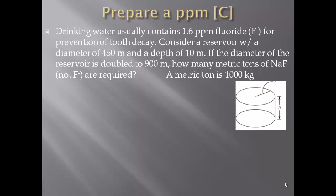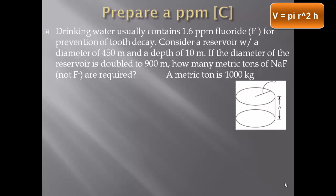Drinking water usually contains 1.6 ppm fluoride for prevention of tooth decay. Consider a reservoir with a diameter of 450 meters and a depth of 10 meters. If the diameter of the reservoir is doubled to 900 meters, how many metric tons of NaF — not F⁻ — are required? A metric ton is 1,000 kilograms. We need to know the volume of this reservoir. The volume of a cylinder is π r² h, and finding the volume will give us a unit that is cubed.